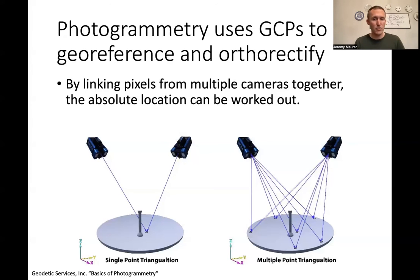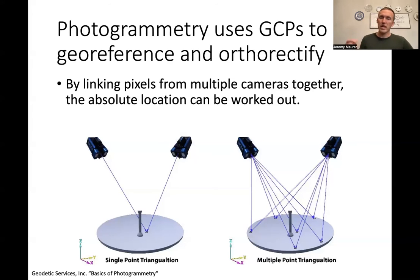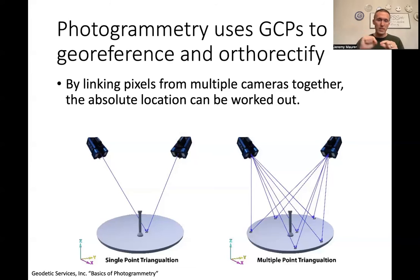Each photograph not only has the location information we're solving for, but also the angles — the angle from the camera to each one of the points. So you have the orientation of the camera and the angle at which light is entering the lens. For an HD photograph of 1280 by 720 pixels, you can work out the angle to each one of those pixels. We need those angles, the camera orientation, and the camera location, and by having these ground control points with known locations, we can back-calculate what those camera positions are.